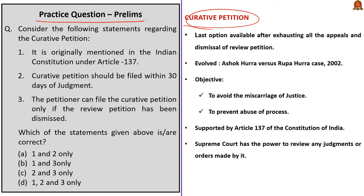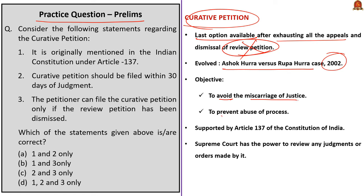Curative Petition is the last option available to approach the judiciary after exhausting all the appeals and dismissal of Review Petition. This rare remedy evolved by Constitution Bench of Supreme Court in 2002 in Ashok Hura vs. Rupa Hura case. The main objective of Curative Petition is to avoid the miscarriage of justice and to prevent the abuse of process. A Curative Petition is supported by Article 137. As per Article 137, in the matters of law and regulations made under Article 145, the Supreme Court has power to review any judgments or order made by it.